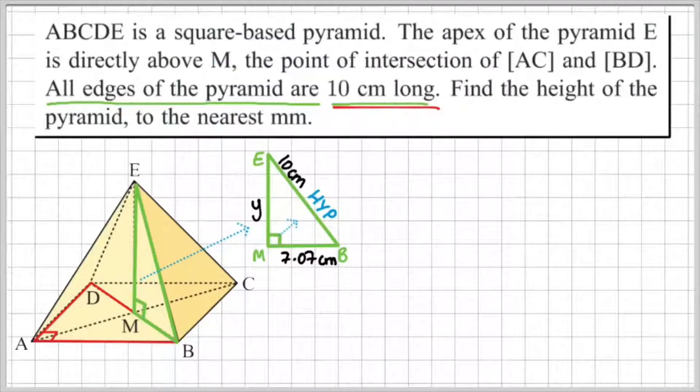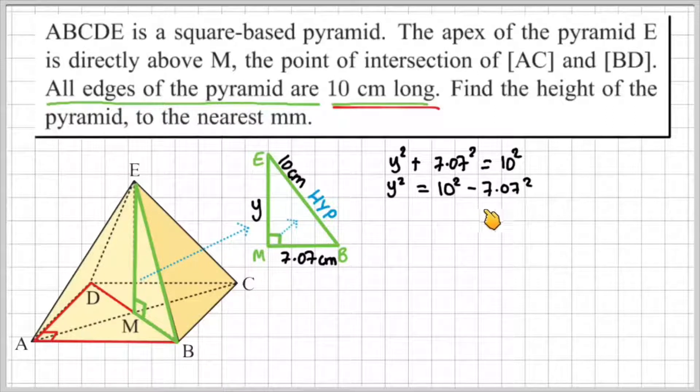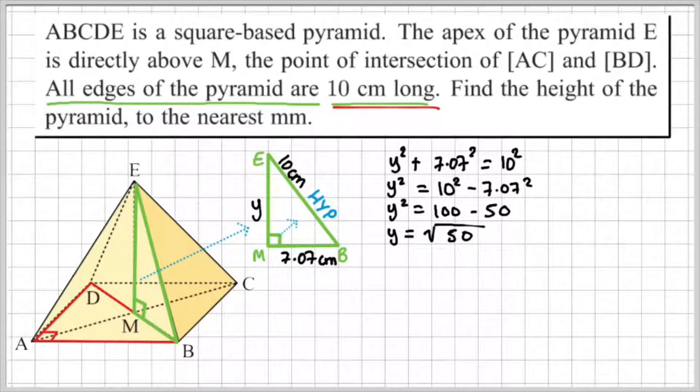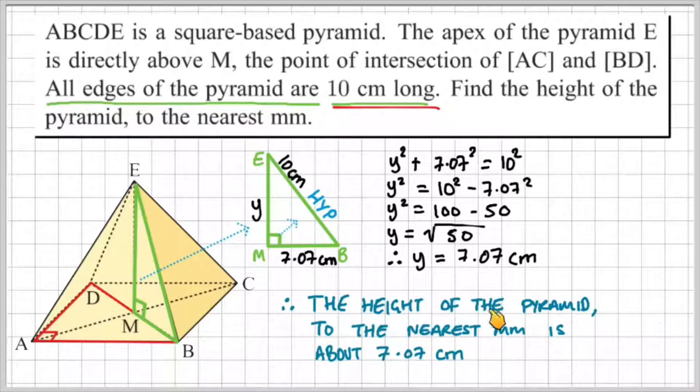I'm going to set this up again. So I've got more space to work this out. As Y squared plus 7.07 squared is equal to 10 squared. Now, if I move the 7.07 squared to the right-hand side, I would get Y squared is equal to 10 squared minus 7.07 squared, which will give me Y squared is equal to 100 minus 50. 10 squared is 100, and 7.07 squared is about 50. So now if I do 100 minus 50, I would get Y is equal to the square root of 50. And the square root of 50 is about 7.07 centimeters. Therefore, the height of the pyramid to the nearest millimeter is about 7.07 centimeters.